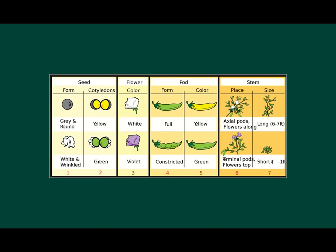Here are the list of characteristics that were studied by Mendel. He was studying some features of the seeds, flower, pod and stem. Regarding the seeds, some were yellow and some were green for the cotyledon. For the form of the seeds, some were round and some were wrinkled, grey and white. For the flowers, the color of the flower, white and violet or purple.